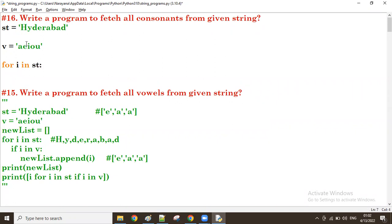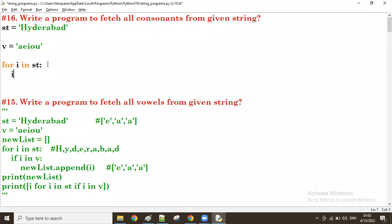For i in st, first time i value capital H is coming. Now I want to verify if it is available in v. If available means vowel, if not available means consonant.